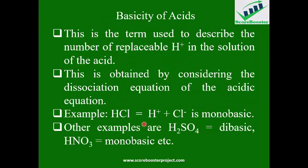Let's talk about the basicity of acids. Basicity is a term used to describe the number of replaceable hydrogen ions in the solution of the acid. When acid is dissolved in water, there is dissociation — but to what extent do they dissociate? The basicity depends on the number of hydrogen ions that are replaced during the reaction. For example, HCl dissociates to give one H+ and one Cl−, so it is monobasic. H2SO4 can give two H+ ions, so it is dibasic.